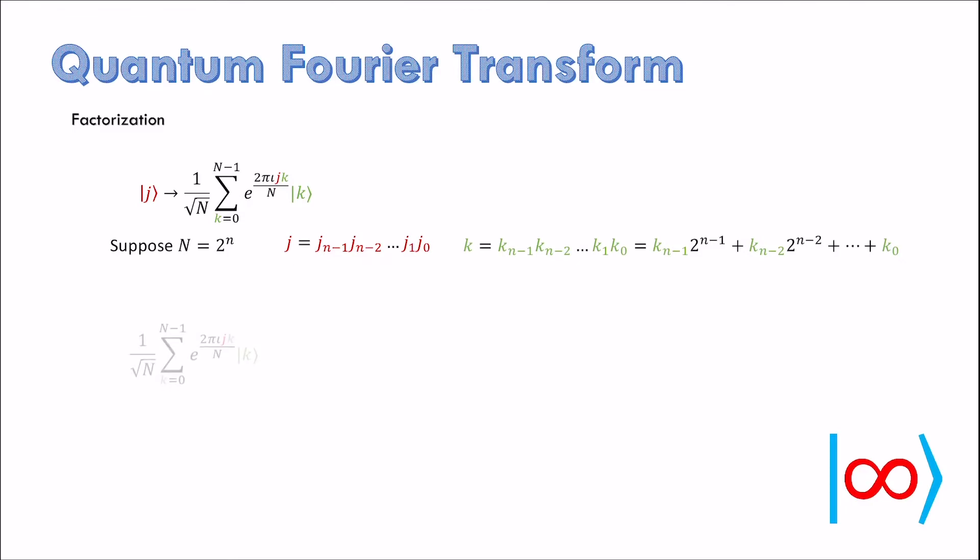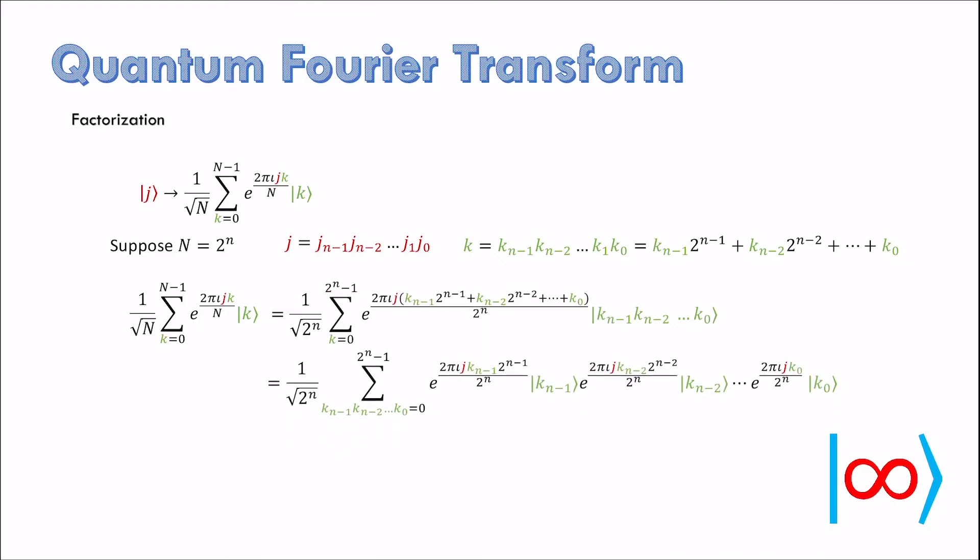The proof of factorizability of the transformed vector is like an exercise in string concatenation. Hence, instead of using tensor product notation, I have just separated terms like strings. It is amazing how exponential amplitudes and qubit states pair with each other.